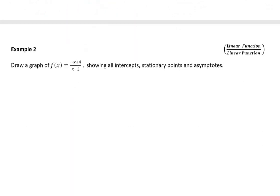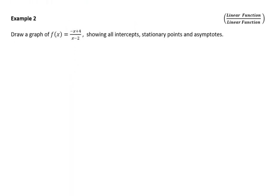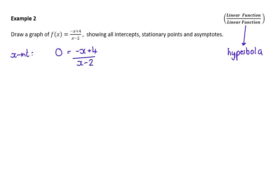Now that we've done an example of a polynomial, let's look at our next example: a linear function over a linear function. A linear function divided by a linear function is actually a different way to write a hyperbola. There are two ways to do this type of question. You could treat this like a normal function and find its intercepts, stationary points, and asymptotes without even realizing it is a hyperbola. So let's try that method first. Setting y equal to zero, the only way for this fraction to be zero is if the numerator is zero.